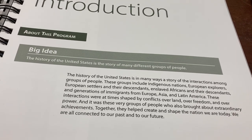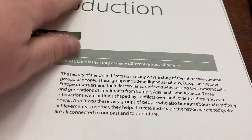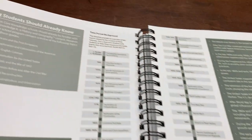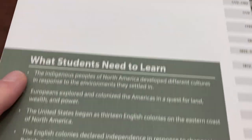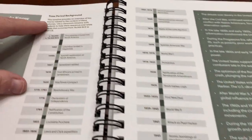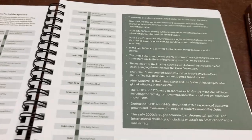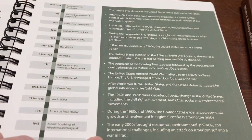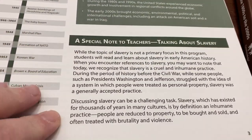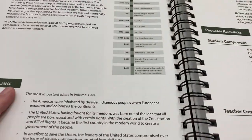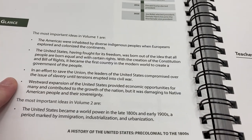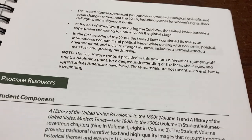So here's the big idea: the history of the United States is the story of many different groups of people. It tells you what the students should already know and then what the students need to learn. There is time period background, which is a continuation of what the students need to learn, and a special note to teachers talking about slavery. It also gives you at a glance the most important ideas in Volume One and Volume Two.